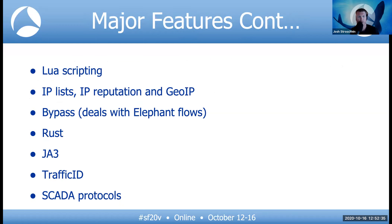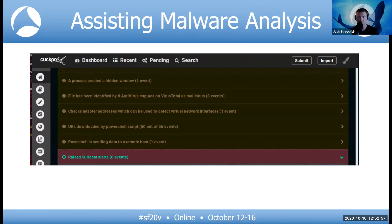Some other features: LUA scripting, IP reputation lists, GeoIP lists, bypass. A lot of the newer code is being written in Rust for a more memory-safe environment to help reduce the attack surface of the engine itself. JA3, JA3S, traffic ID, some SCADA protocols — the list goes on and on.